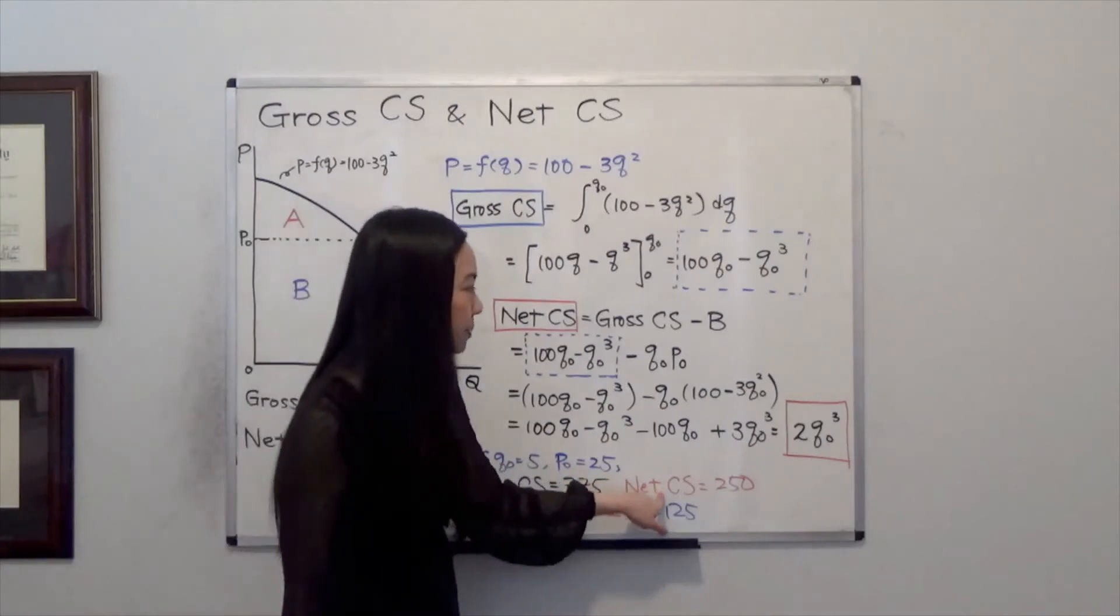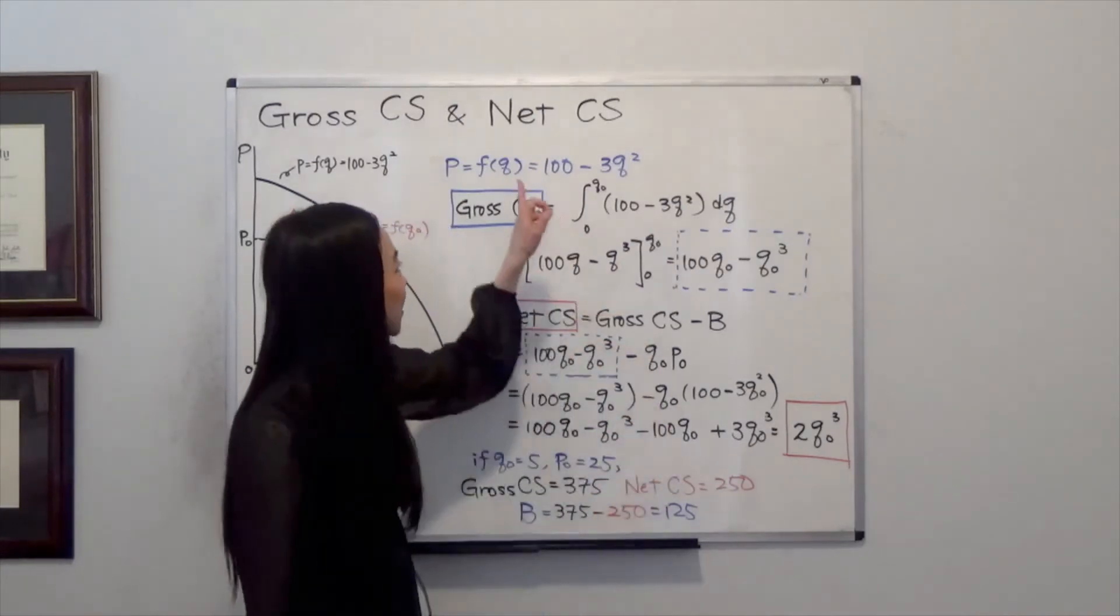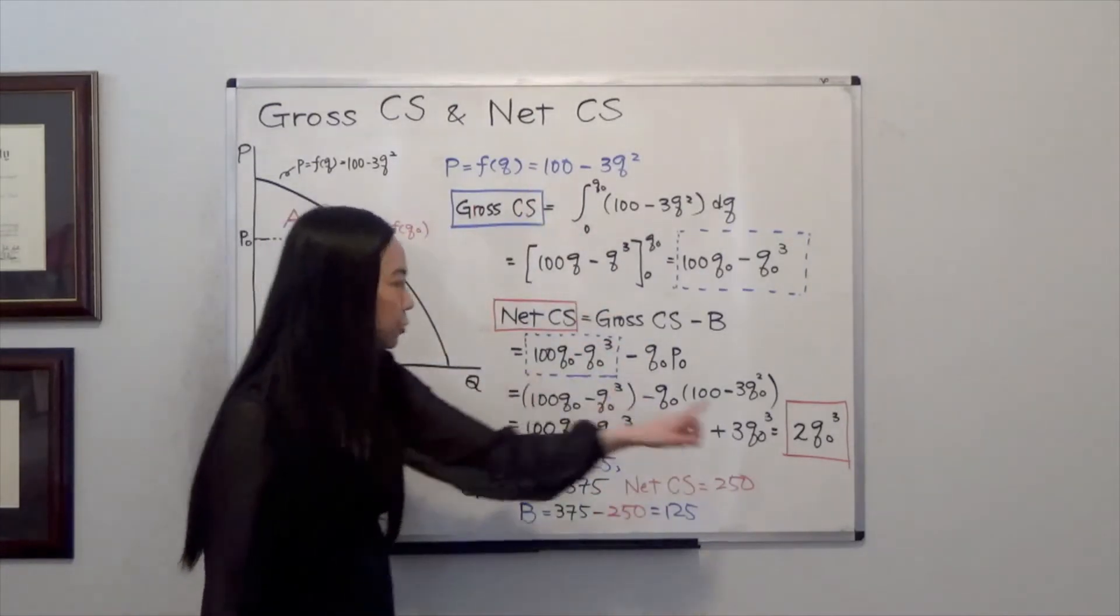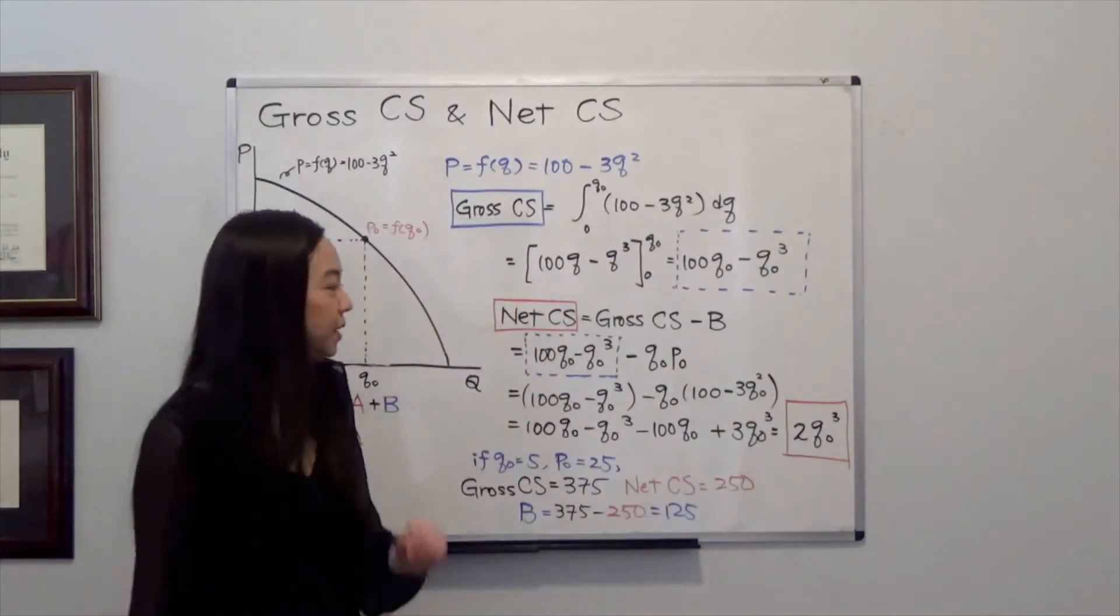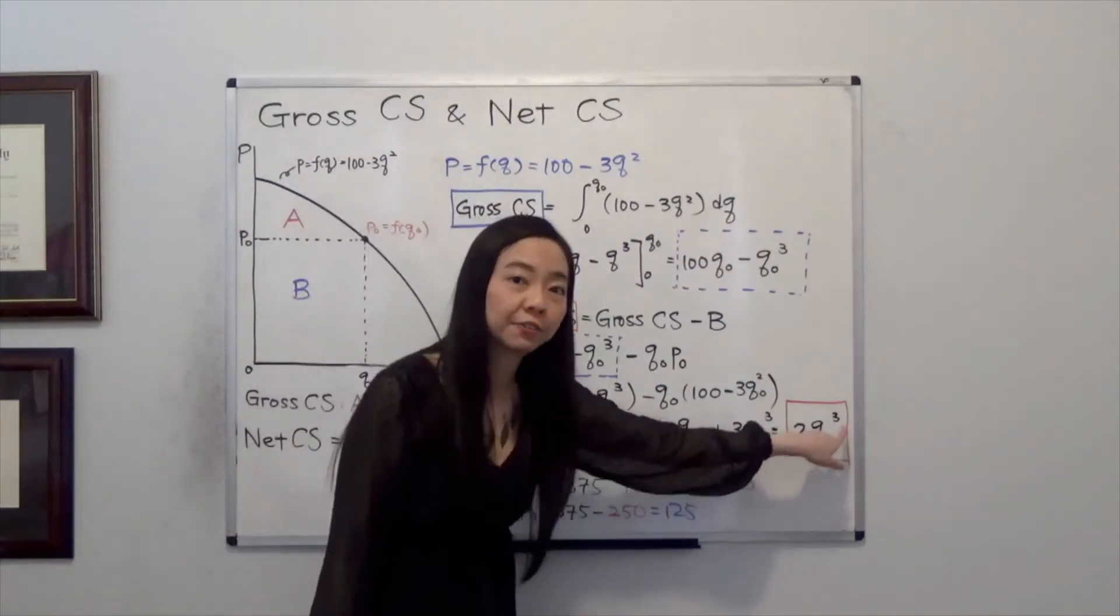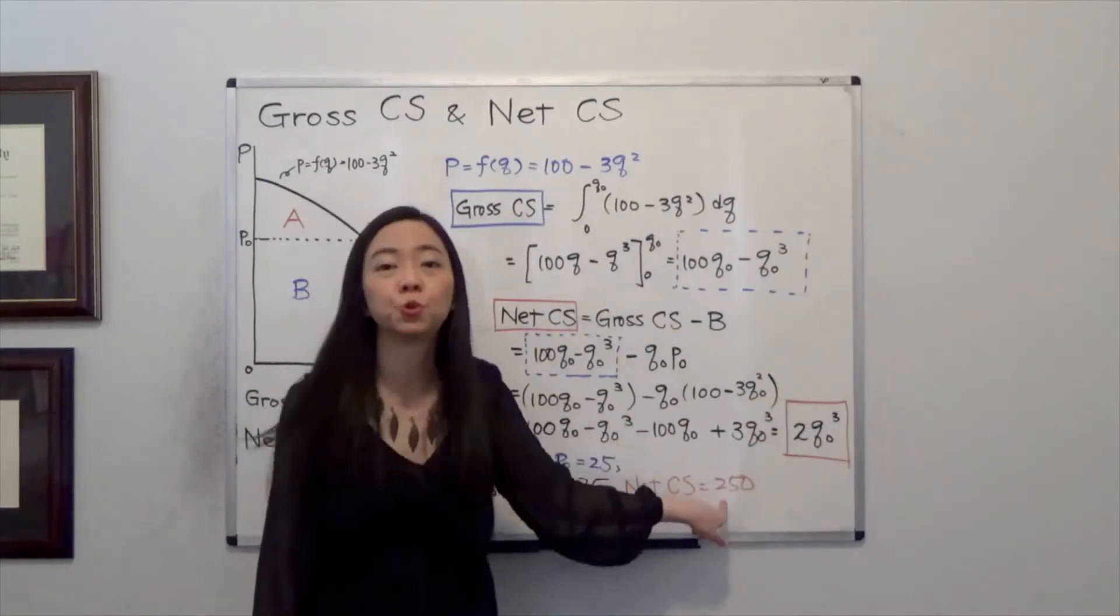And your net consumer surplus, again, you plug in your Q0 equal to 5 in here. Then your net consumer surplus is equal to 2 times 5 cubed. And that will give you 250.